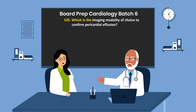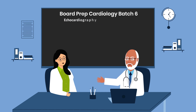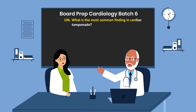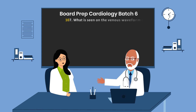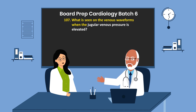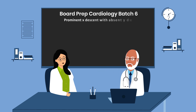Question 105. Which is the imaging modality of choice to confirm pericardial effusion? Echocardiography. Question 106. What is the most common finding in cardiac tamponade? Elevated jugular venous pressure. Question 107. What is seen on the venous waveforms when the jugular venous pressure is elevated? Prominent X descent with absent Y descent.